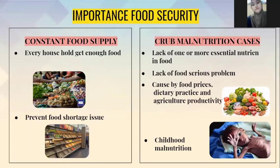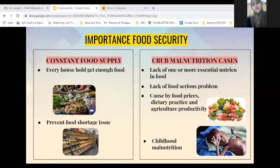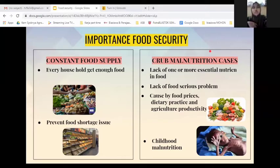Now I will talk about the importance and the challenges in food security. The first importance is a constant food supply. We want to have a constant food supply in the future to make sure every single household gets enough food. If they don't get enough food supply, it may lead to more problems such as malnutrition or worse.